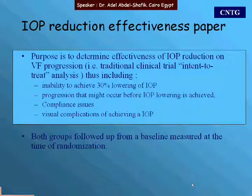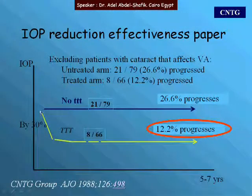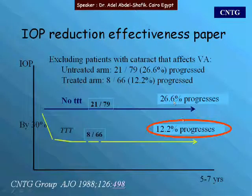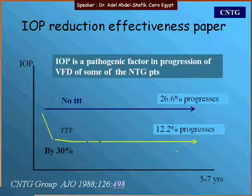In this analysis, both groups were followed from the baseline measurement at the time of randomization, with fields checked for any further progression. In the no-treatment arm, progression was 26.6 percent, and in the treatment arm it was 12.2 percent. This again confirms that IOP is a pathogenic factor in visual field deterioration in some normal tension glaucoma patients.